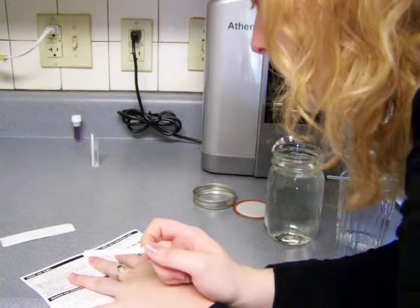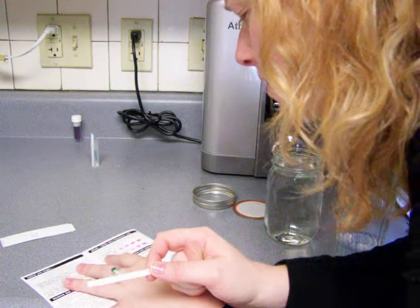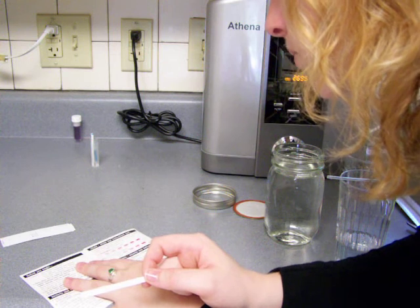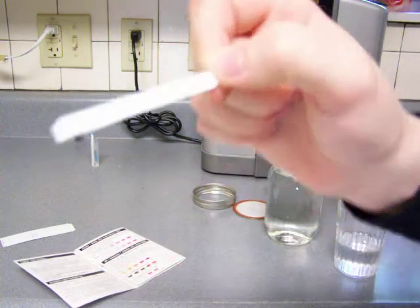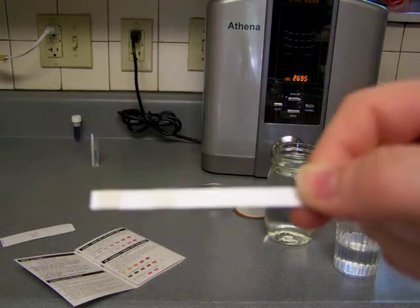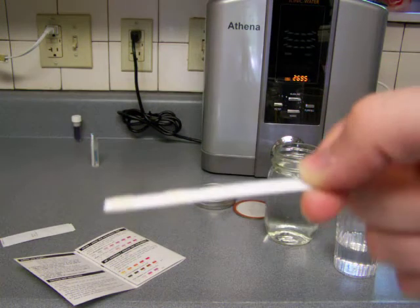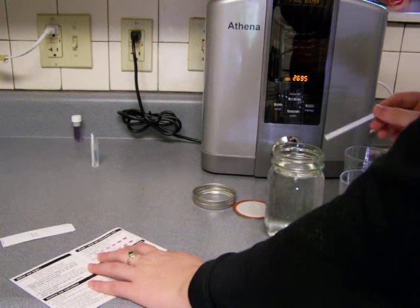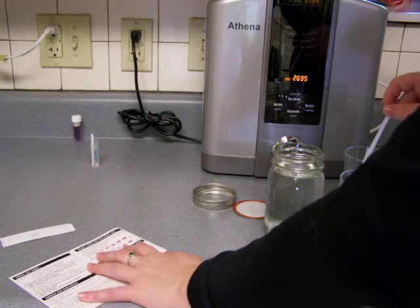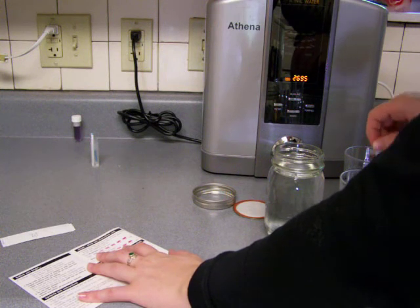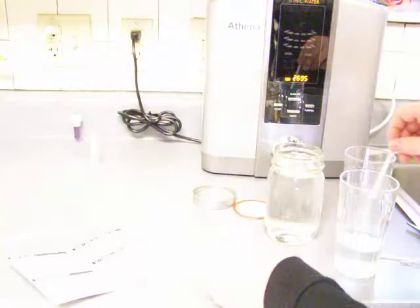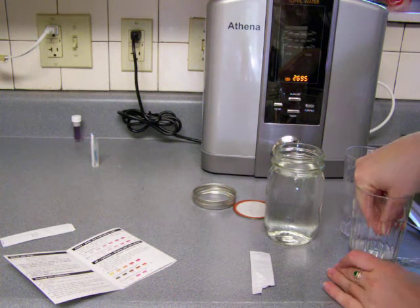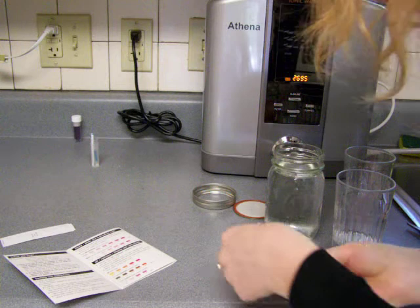It says, immerse the reagent pads into water sample for two seconds. Remove after one minute. Match colors to chart below. One minute. So there's the pads. I don't even know if you can see that, but there's little pads on the strip. Okay. So it says to immerse into water sample for two seconds. So I'm just going to put it on this little thing. So one Mississippi, two Mississippi, and I'm just going to let it sit here.